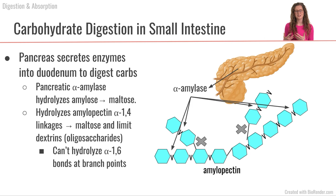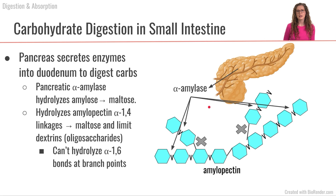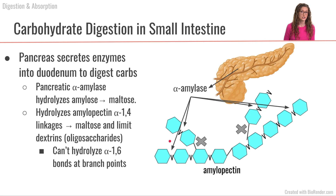Now we've reached the small intestine, where the bulk of carbohydrate digestion takes place. Carbohydrate digestion here is due to enzymes secreted from the pancreas. The pancreas secretes the enzyme alpha-amylase, which is able to hydrolyze amylose and the alpha-1,4 linkages in amylopectin. However, pancreatic alpha-amylase is not able to digest the alpha-1,6 bonds in amylopectin — that requires a different enzyme called dextrinase.